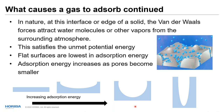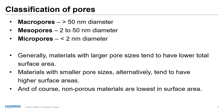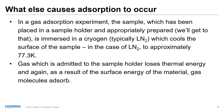IUPAC has defined pore size ranges: macropores are 50 nanometers and larger in diameter, mesopores are from about 2 to 50 nanometers, and micropores are typically less than 2 nanometers in diameter. Generally, materials with larger pore sizes tend to have lower total surface area, while materials with smaller pore sizes tend to have much higher surface area. Non-porous materials are lowest in surface area.